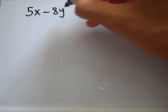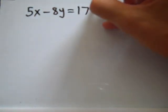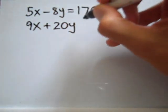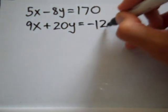Suppose I have a system of two equations and two unknowns such as 5x minus 8y is equal to 170 and 9x plus 20y is equal to negative 124.